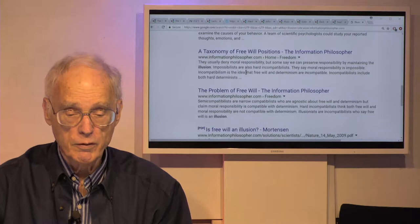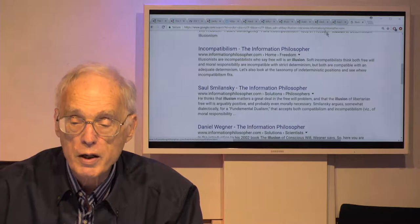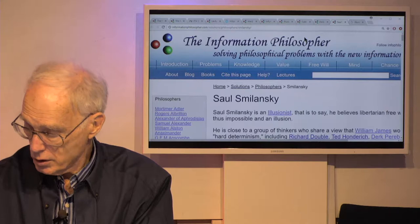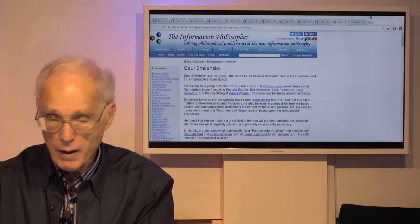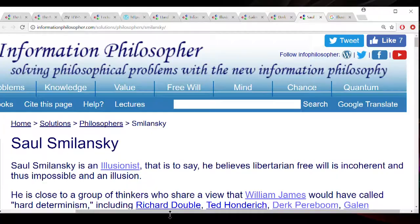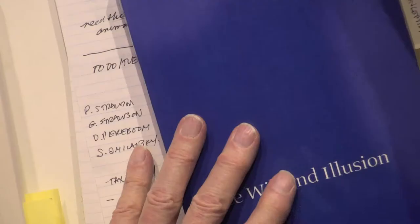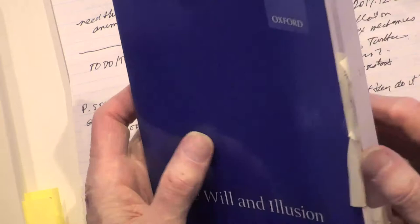Here's Saul Smolanski — he's made a reputation for believing that free will is an illusion. Let me show you his book Free Will and Illusion. He's a very prominent Israeli philosopher and I've got his book marked up quite a bit. Smolanski is close to a group of thinkers who share a view that William James would have called hard determinism.